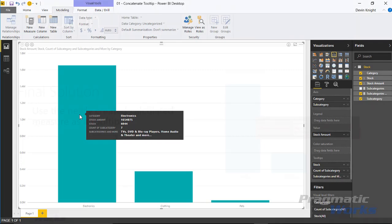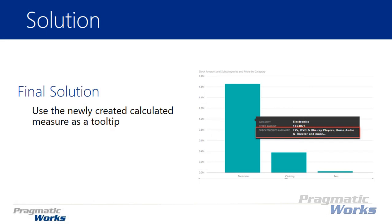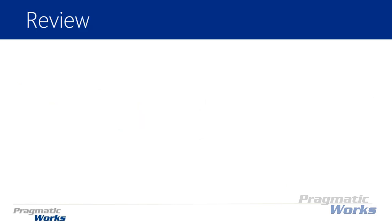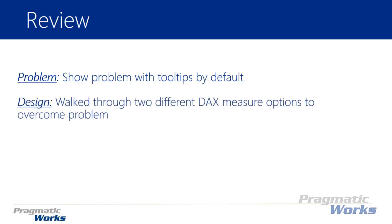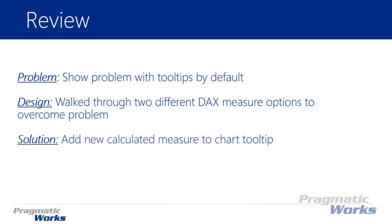The solution in this example was straightforward once we did the design. We created the two calculations, dropped them into our tooltip, and saw the results of our design — placing the calculated measure in the tooltip area made everything visible clearly. A quick review: the problem was overcoming the default tooltip limitations. We showed that problem and how it reacts by default. We then created two different designs for the solution, walked through those two different DAX calculations to overcome the problem, and showed that the solution was adding a new calculated measure to the tooltip area.